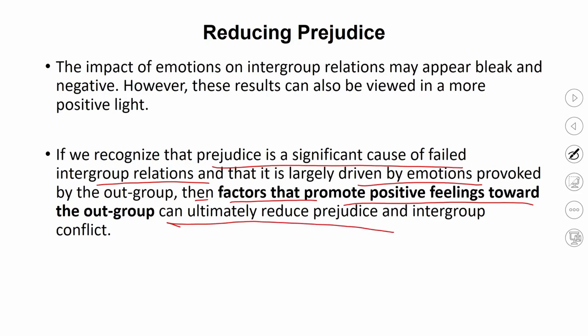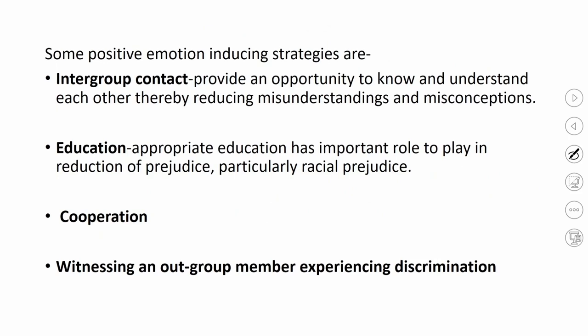We need to change the emotional balance of intergroup relationships. Some strategies to enhance positive emotions include making more intergroup contact in a more controlled setting. More opportunities to contact and talk to people of the other group allows us to know more about them. Many times prejudice happens because we have generalized misconceptions and assumptions about people and act based on those. More intergroup contact provides opportunities to know and understand each other, thereby reducing misunderstanding and misconceptions.